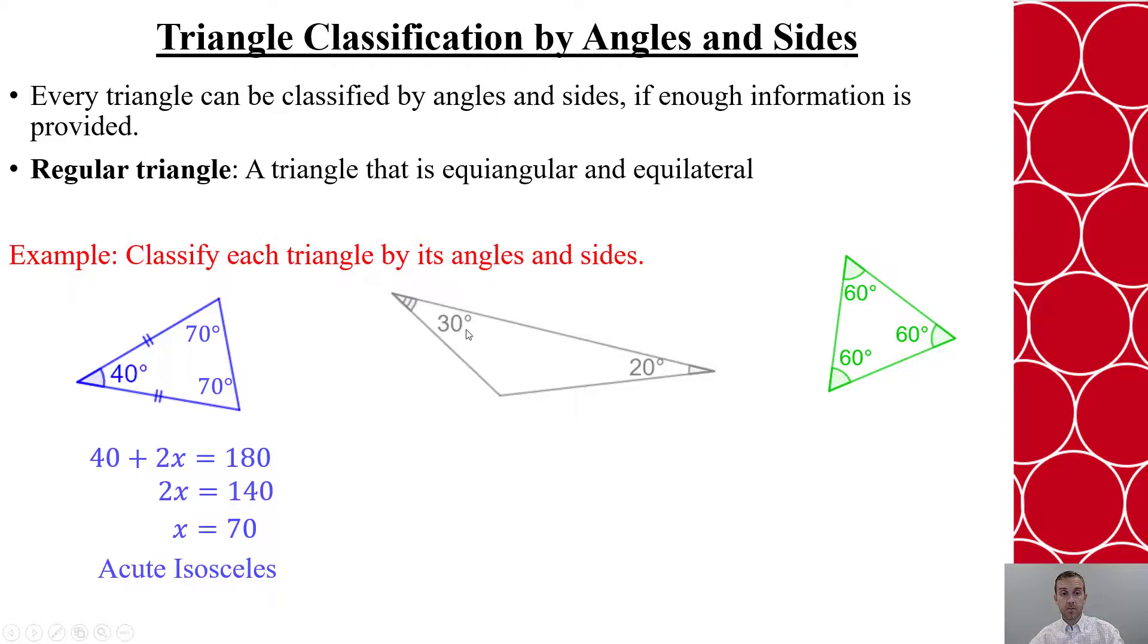Now at the second one, I'm missing the third angle measure. But again, I can use the fact that the angle measures have to sum to 180 degrees and then solve for the missing angle measure to see that it's 130 degrees. Now since each angle measure is different, I know that each side has a different side length. Therefore, this has to be an obtuse scalene triangle.